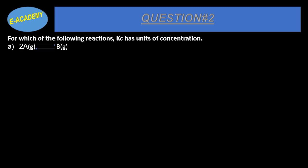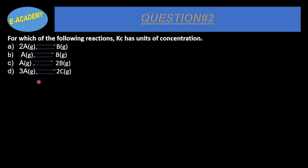Reaction A: 2A → B. Reaction B: A → B, both one mole each. Reaction C: A → 2B, where reactant A is one mole and product B is two moles. Reaction D involves a two-to-one mole ratio. The correct option is Reaction C: A → 2B.